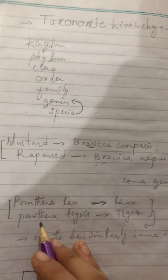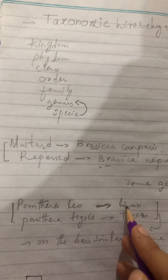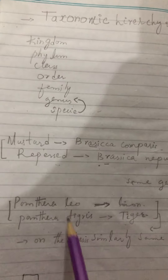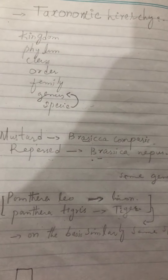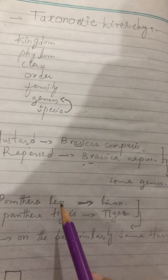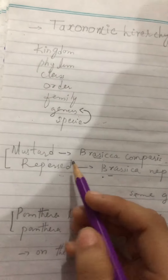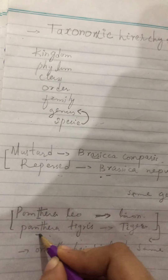Another example of genus: Panthera leo is the scientific name of lion, and Panthera tigris is the scientific name of tiger. As we know, lion and tiger have some differences, but on the basis of their similarities in structure, we classify both in the same genus — Panthera.